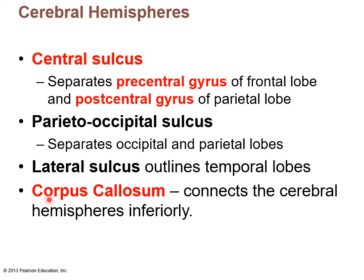Because the longitudinal fissure separates the two cerebral hemispheres, there is a connection underneath: white matter called the corpus callosum that connects the cerebral hemispheres inferiorly, allowing the right brain to know what the left brain is doing.